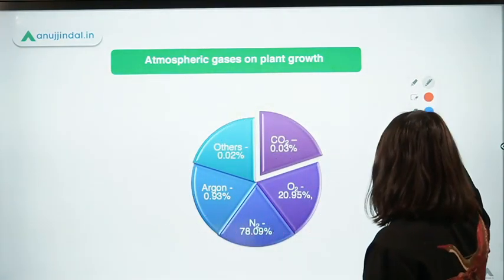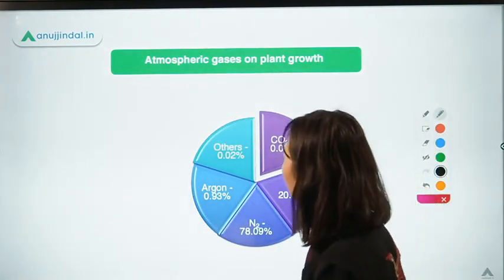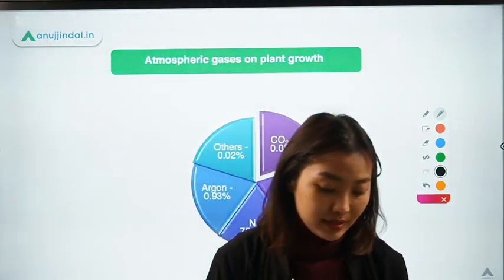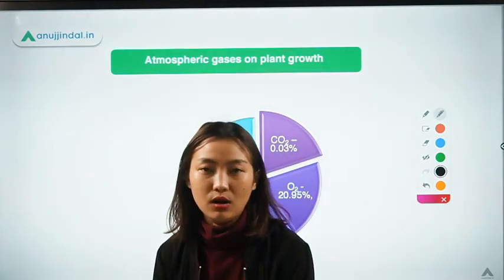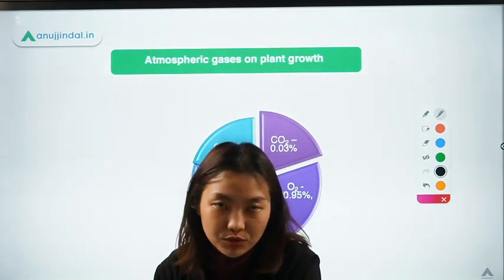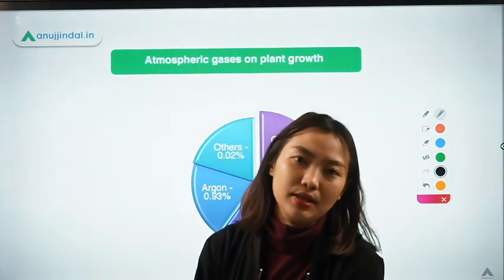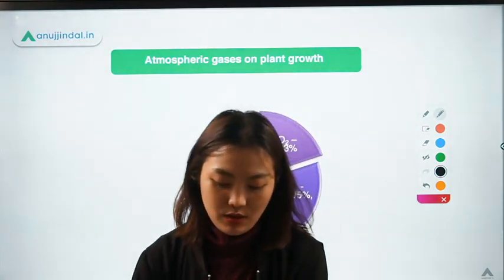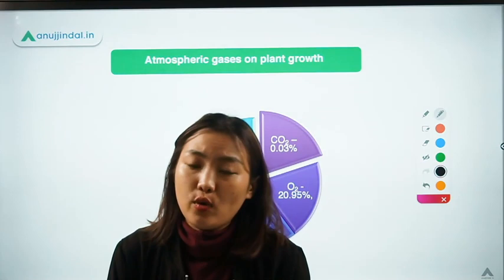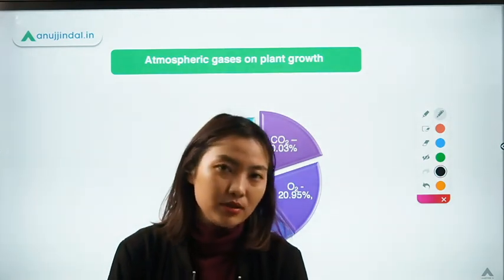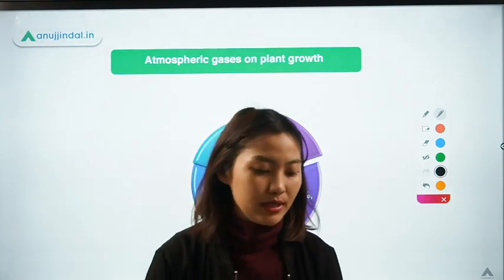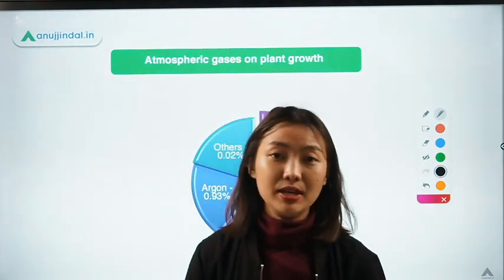So that's all for today. These are some of the factors affecting crop production. We'll be continuing with the same chapter in the next session, trying to cover all the factors which affect the normal growth and development as well as crop production of the plants. If you have any queries or doubts, don't forget to drop them in our Telegram group, and the team will be ready to help.